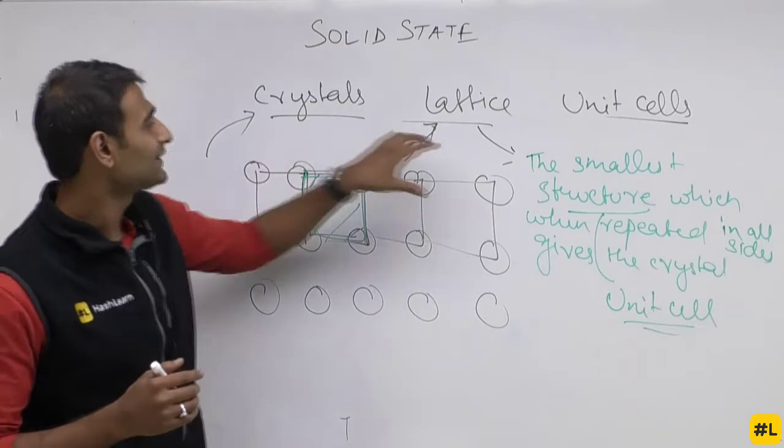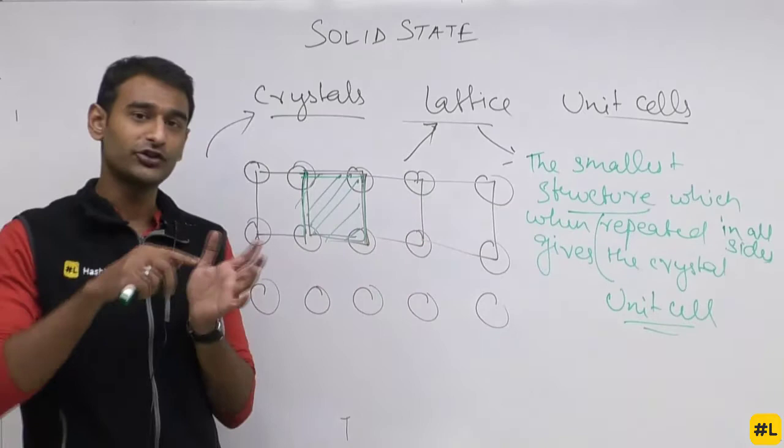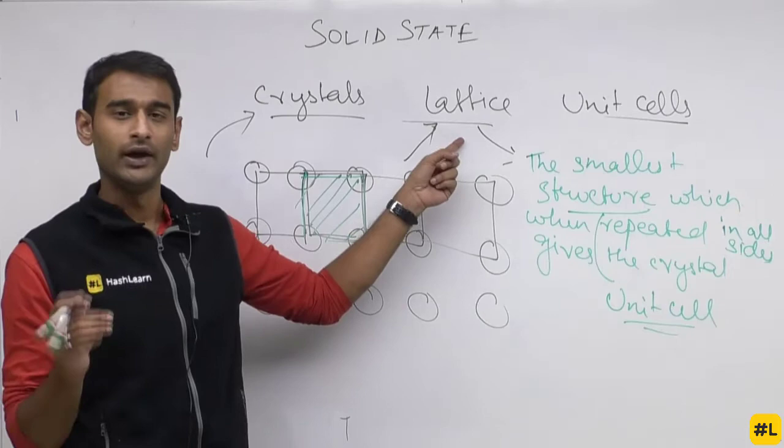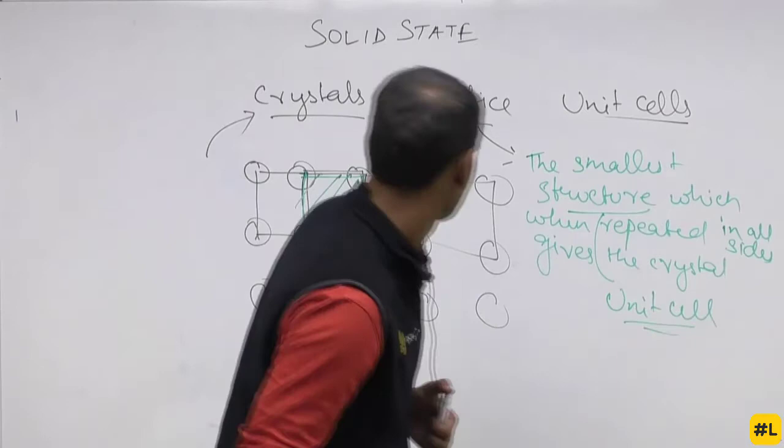Unit cell is the smallest part of a crystal which shows the structure of the substance. If I repeat the unit cell in all directions I get my crystal. Lattice is simply another word for structure, and all the points in the structure are known as lattice points.